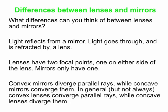Another difference is that convex mirrors diverge parallel rays, while concave mirrors converge them. And in general — it's not always true, but it's generally true, particularly in the case where you have glass or plastic lenses in air — convex lenses converge parallel rays, and concave lenses diverge them. So there are some big differences between lenses and mirrors.